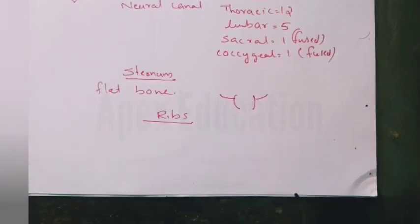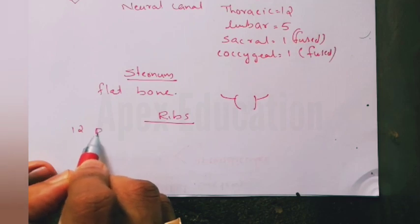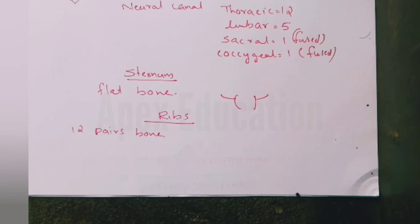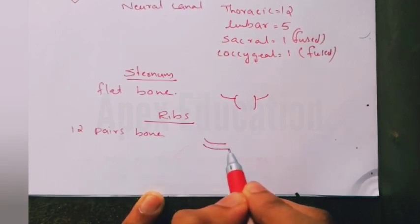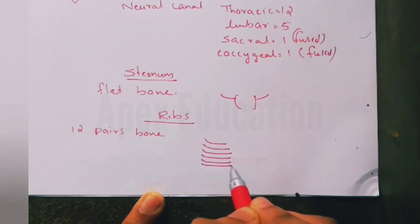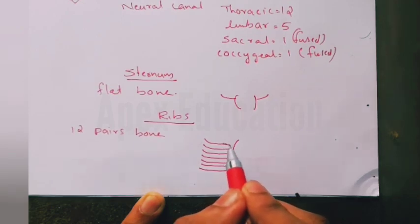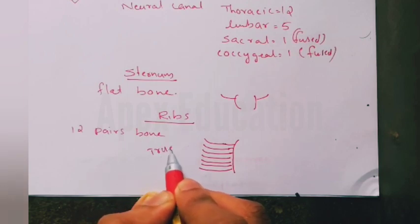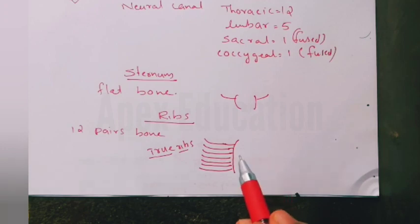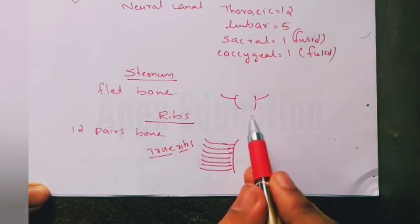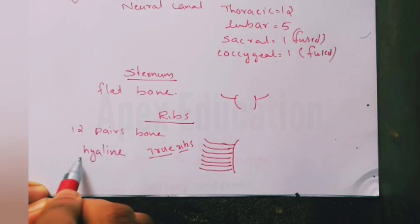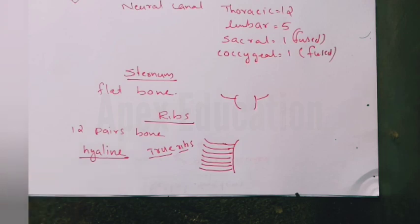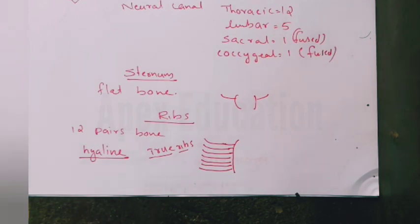Ribs consist of 12 pairs of bones, making 24 bones in total. The first 7 pairs of ribs are called true ribs. These articulate with the sternum ventrally and the vertebral column dorsally with the help of hyaline cartilage. Remember: hyaline is the cartilage that connects ribs to the sternum and vertebral column, while hyoid is the U-shaped bone at the floor of the buccal cavity — already discussed under skull.